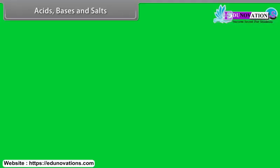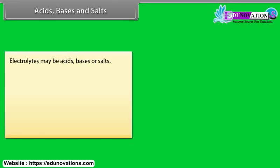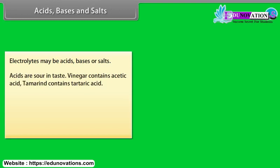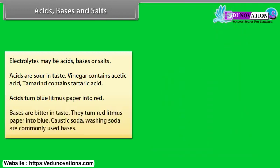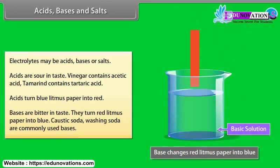Acids, bases, and salts. Electrolytes may be acids, bases, or salts. Acids are sour in taste. Vinegar contains acetic acid; tamarind contains tartaric acid. Acids turn blue litmus paper into red. Bases are bitter in taste. They turn red litmus paper into blue. Caustic soda and washing soda are commonly used bases.